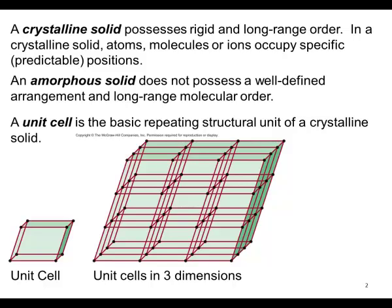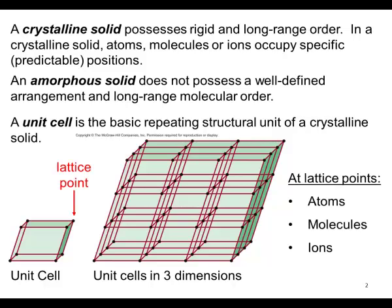A unit cell is the basic repeating structural unit of a crystalline solid. At the lattice points, we find atoms, molecules, or ions.